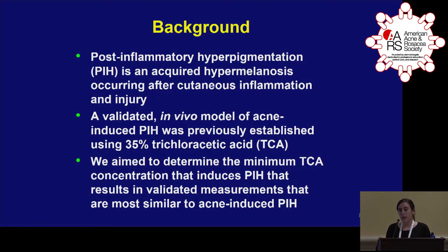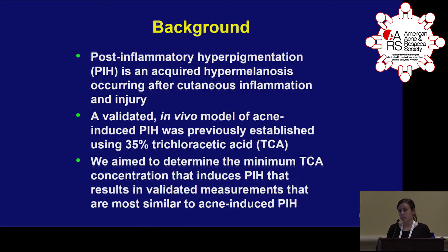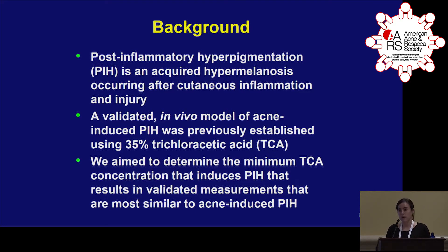PIH is an acquired hypermelanosis that occurs after cutaneous inflammation and injury, and is very common in our acne patients following the resolution of acne. Previously, our group developed a validated in vivo model of acne-induced PIH using 35% trichloroacetic acid, or TCA. However, at that time we saw necrosis and sloughing of the skin at that higher concentration. So this new study aimed to refine that model and determine the minimum concentration of TCA that could induce PIH similar to acne-induced PIH.